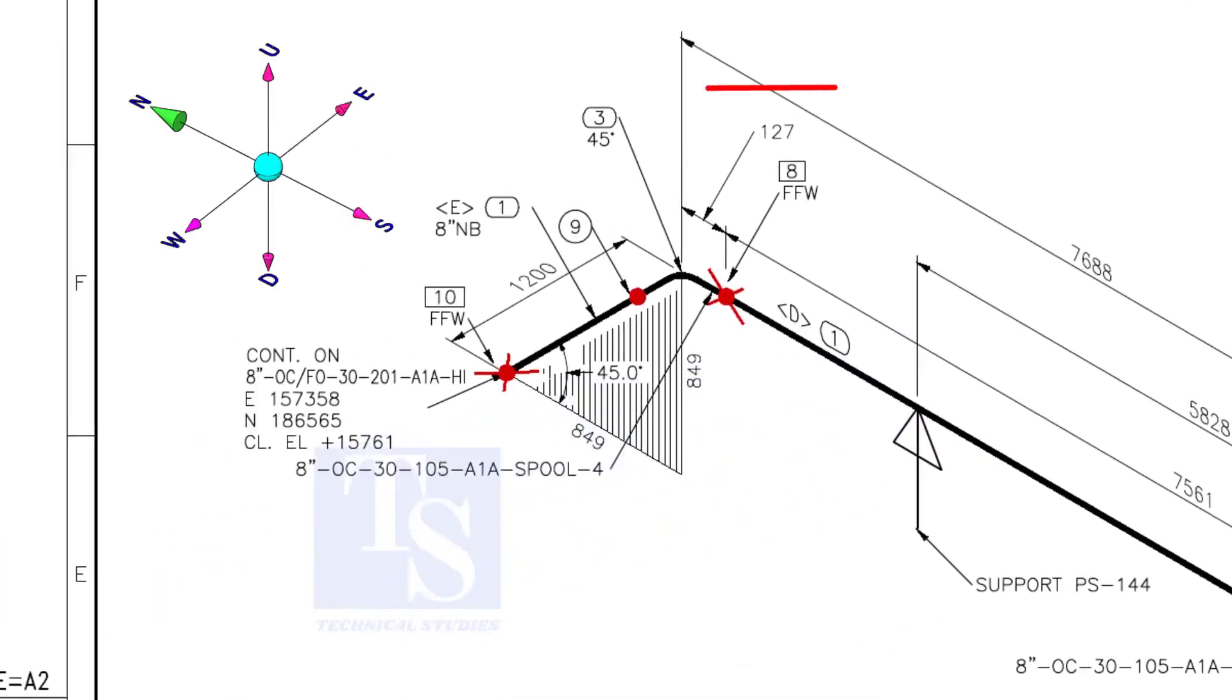As per the drawing, the pipe goes to the north and bends 45 degrees to the down direction. Let us fabricate and complete the welding separately.